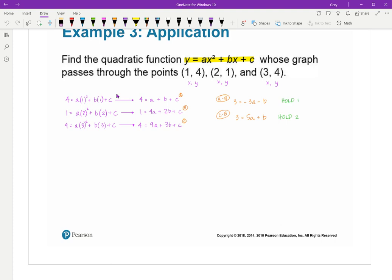Now when I combine these, my B's are going to fall out. So, I'm going to have 6 equals 2A. Divide by 2 and A equals 3. I'm going to go plug it into one of my equations. I'm looking for B. So, I'm going to plug it in to hold 2 because B is positive. That means it's going to be 3 equals 5 times 3 plus B. So B equals negative 12.